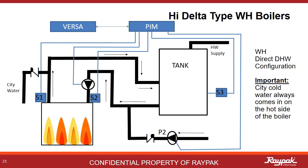Moving on from hydronic and into WH-type appliances, as in water heaters. When a high-delta is purchased to be a water heater, there is only one mode of operation, so the plumbing is more specific. City cold water always comes in on the outlet side of the boiler to be mixed with the hot water the boiler is producing on the way to the tank. Introducing city cold water on the inlet side of the boiler will likely lead to going below the required minimum inlet temperature of 105 degrees Fahrenheit, resulting in condensing in the boiler. Here the tank works like a decoupler, and the S3 system sensor is placed in a dry well in the tank.